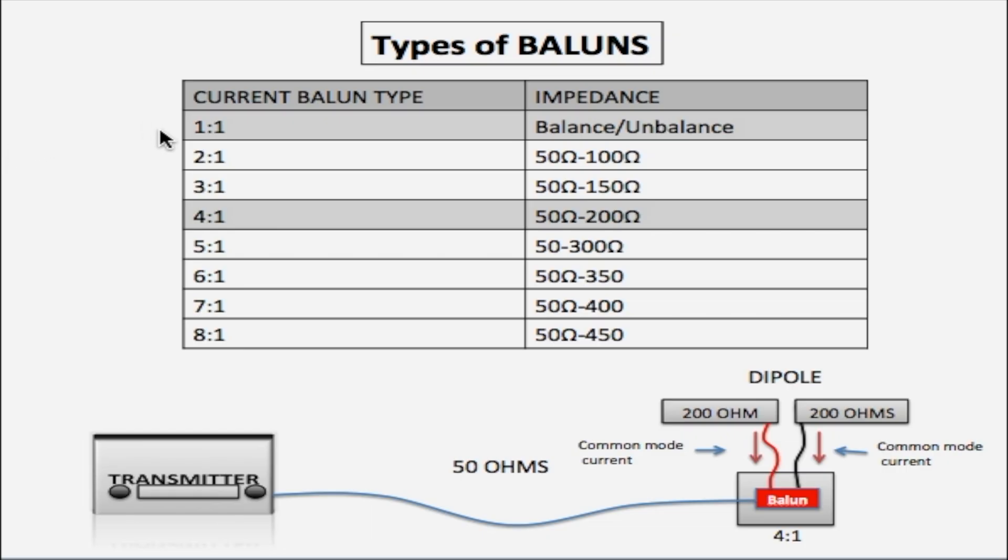Now these numbers here from 1:1 right up to 8:1 are called impedance transformation ratio. This is how we identify Balun transformers. The 1:1 and 4:1 are most often used within antenna transmission systems. Now underneath, we have a transmitter connected to a 50 ohm coax with the 4:1 Balun connecting the coax to a 200 ohm antenna.